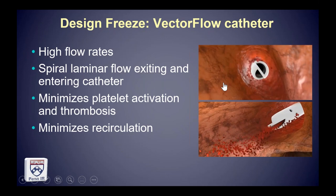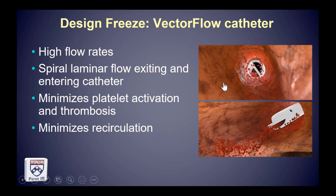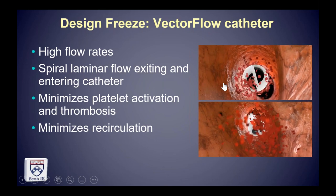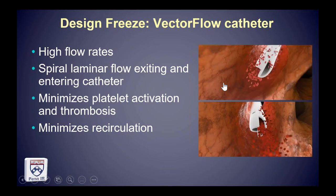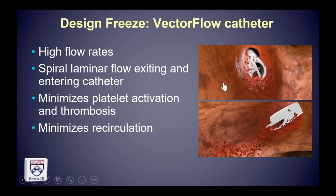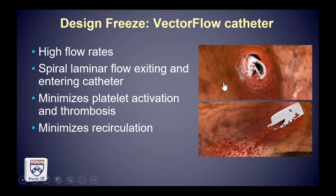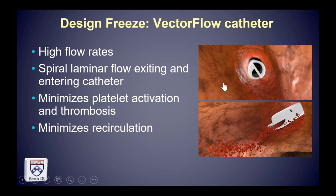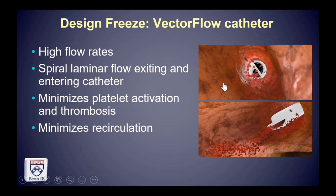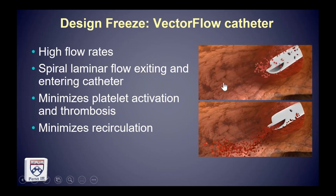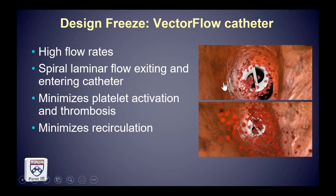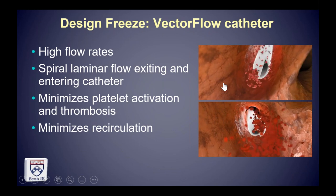As a result, we ended up with a catheter that had spiral laminar flow — we were able to emulate this phenomenon of spiral laminar flow entering and exiting the catheter. This in turn minimizes platelet activation, thrombosis, and recirculation.